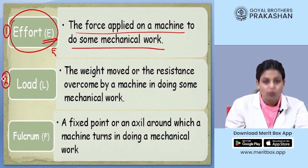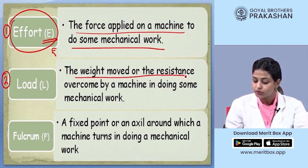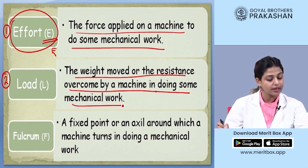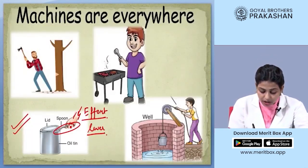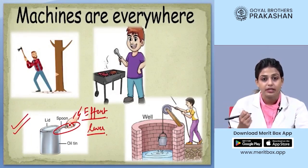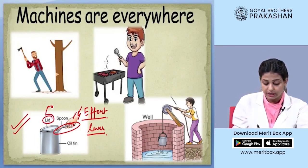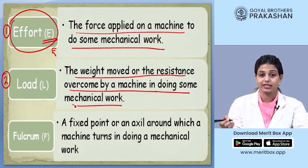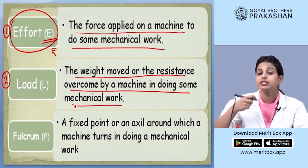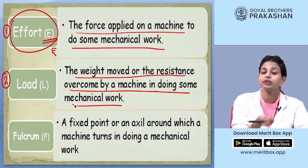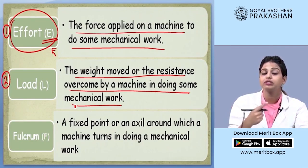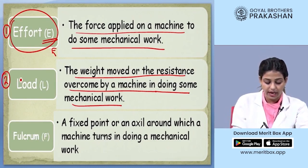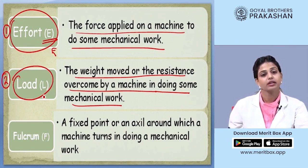The second definition is load. Load is defined as the weight moved or the resistance overcome by a machine in doing some mechanical work. Let's go back to the same example. The lever or the spoon was doing the task of opening the lid. So the lid is the load in the example. The lid might not be very heavy but it is giving some resistance — it is not ready to get open. So the lever is overcoming the resistance given by the lid. This is defined as load and it is represented by the letter capital L.